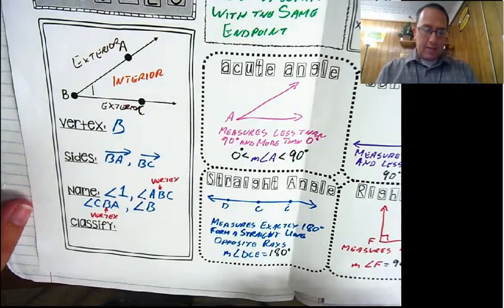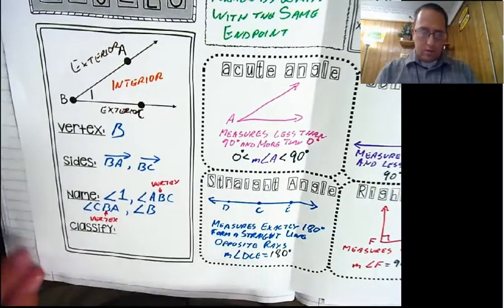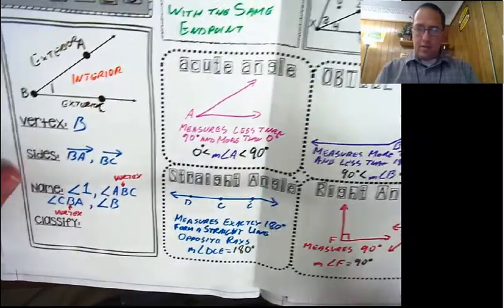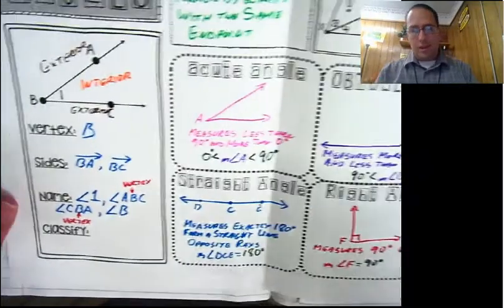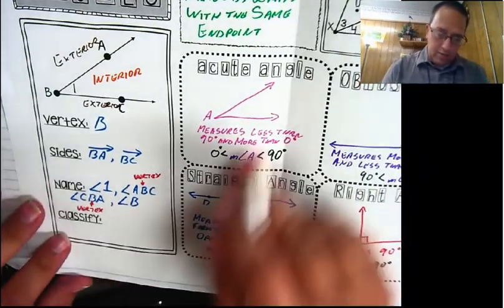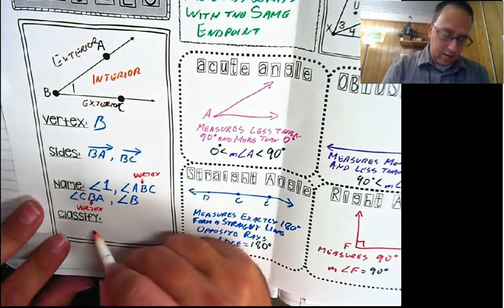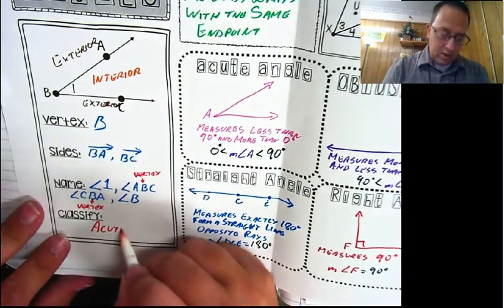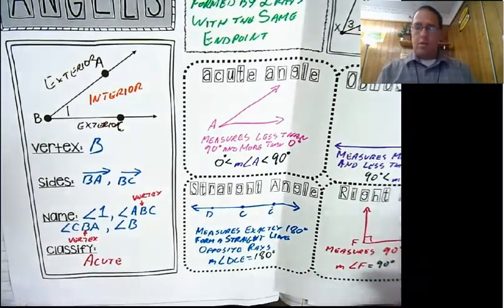So let's classify angle B. Is it going to be acute, obtuse, straight, or right? This is acute. It is quite clearly less than 90 degrees. It's an acute little angle.